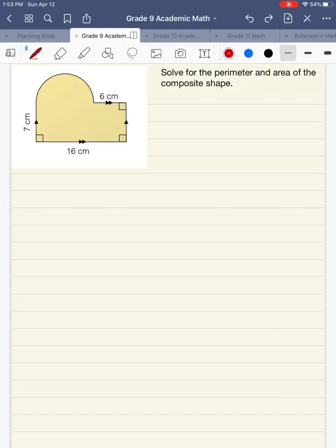Continuing on with our measurement unit, we're going to be solving for the perimeter and area of the composite shape at left. So we have a rectangle with a semicircle sitting on top, and we're going to use the measurements that we've been given already to finish labeling our diagram here.